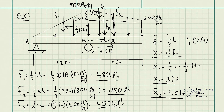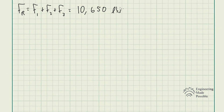Now knowing the forces and each of their locations, we need to solve for the overall resultant force. The resultant force FR is just the addition of the three forces — F1 plus F2 plus F3 — since they all act downward. FR = 4,800 + 1,350 + 4,500 = 10,650 pounds.